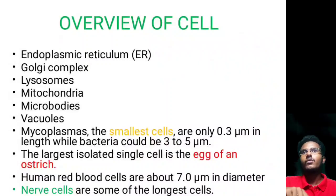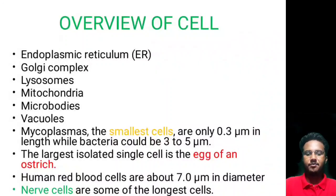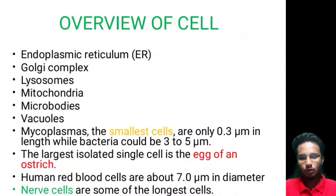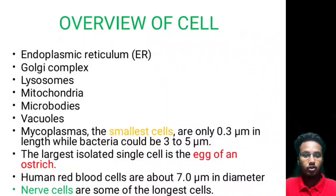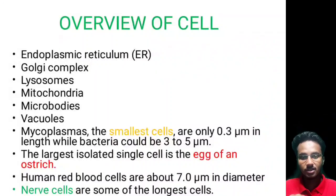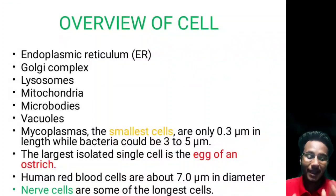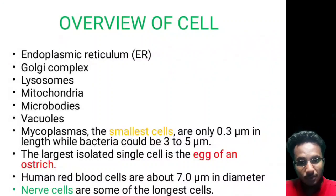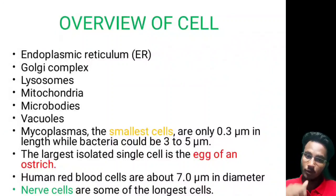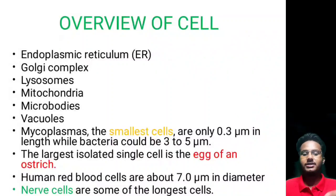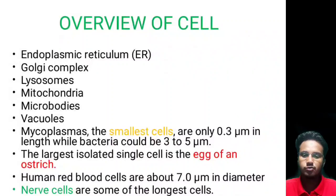Moving to the size of the cell: cells are such minute structures that you cannot see them with the naked eye — except for one single cell, which is the egg of an ostrich. The egg of an ostrich is the largest cell in the world. The smallest cells are mycoplasmas, with a size of 0.3 to 0.05 micrometers, whereas bacteria are 3 to 5 micrometers. Mycoplasmas are about 10 times smaller than bacteria.